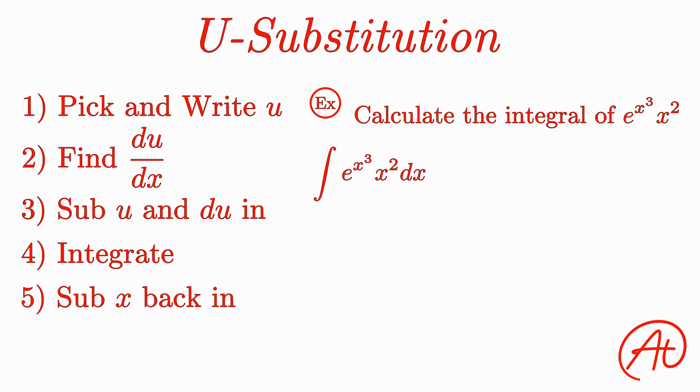However, if we instead picked our u to be x cubed, our du dx becomes 3x squared, which more closely resembles something in our function. To isolate du, we can multiply both sides by dx and get du equals 3x squared dx.